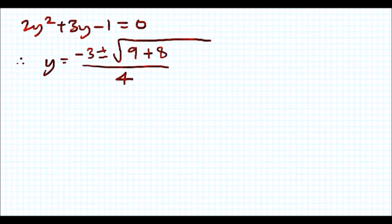That makes sense because this 9 plus 8 is a prime number. Therefore your two solutions for y is going to be, for sin x because y is sin x, it's going to be minus 3 plus minus root 17 over 4.